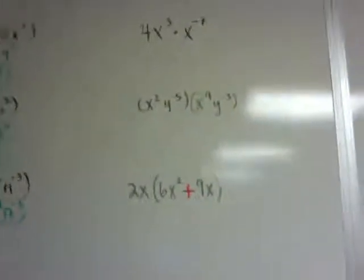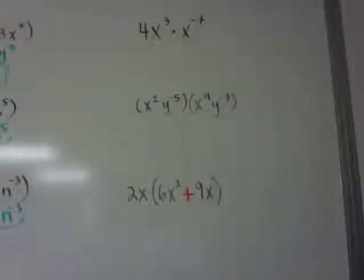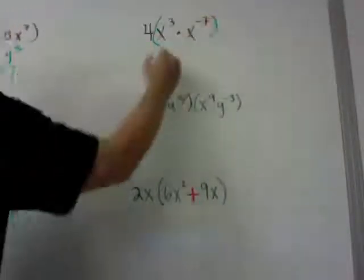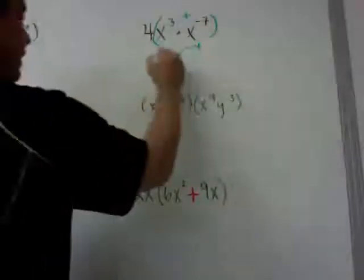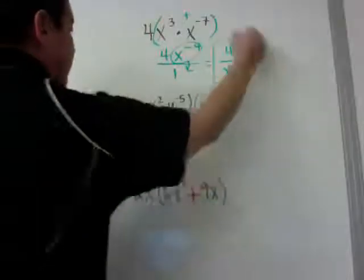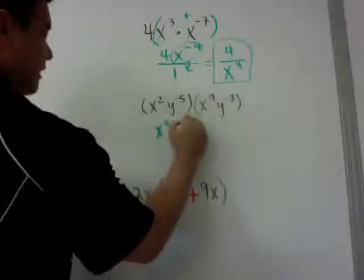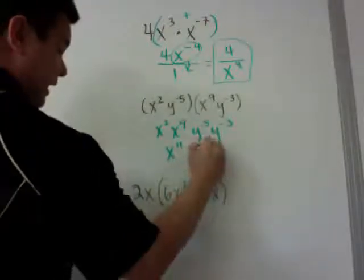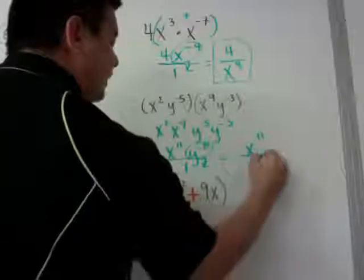Here are a few more examples that are a little different. I have 4 by itself with x cubed times x to the negative 7 — grouping gives x to the 3 plus negative 7, which is x to the negative 4 power. When you end up with a negative exponent you need to move it down, so it becomes 4 over x to the positive 4. Another example combines x²·x⁹ and y⁻⁵·y⁻³ to get x to the 11th over y to the 8th.